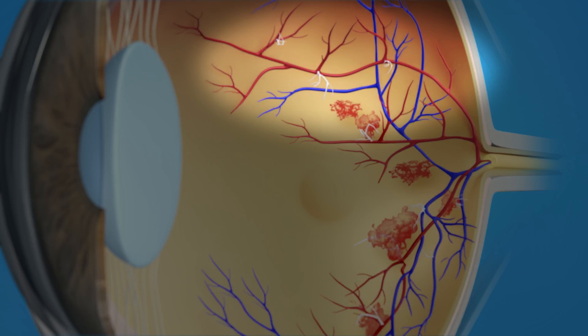However, these new abnormal vessels do not provide proper blood flow. They can also bleed as well as lead to scar tissue, which may cause the retina to wrinkle or even detach from the back of the eye. If similar vessels grow abnormally in the front of the eye, they can block the drainage channels of the eye and cause high pressure, and possibly glaucoma.